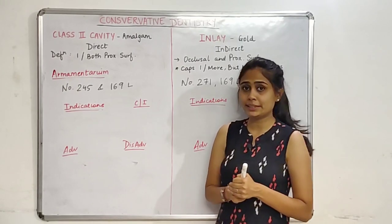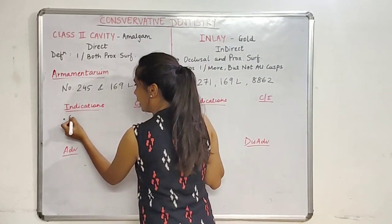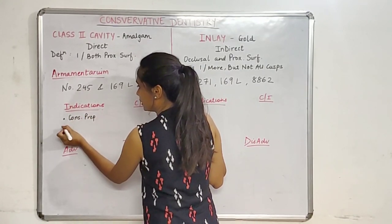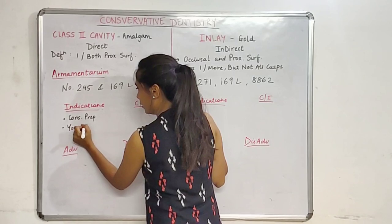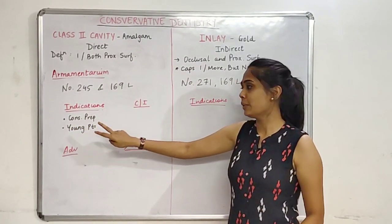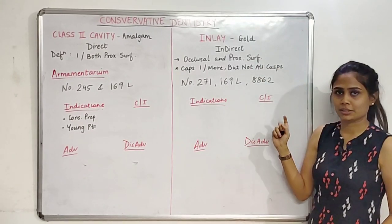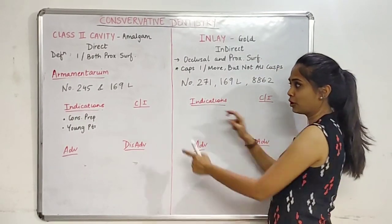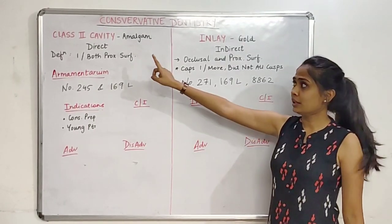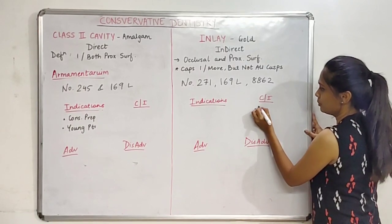Now we'll look at indications, contraindications, advantages, and disadvantages for both in parallel so it's easier to remember. The indication of Class 2 cavity for amalgam is where we have a conservative preparation and we can use it in young patients. If you remember these two points, you'll automatically remember the contraindications of the inlay cavity — it is contraindicated in young patients and in cases requiring conservative preparation.